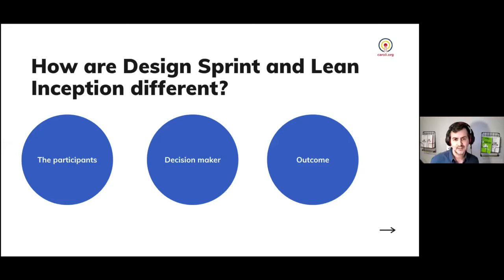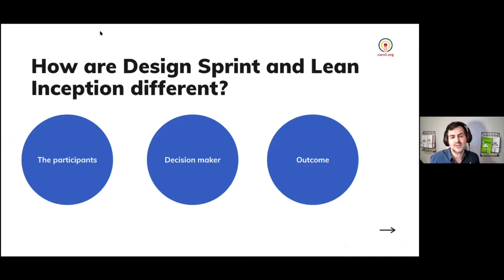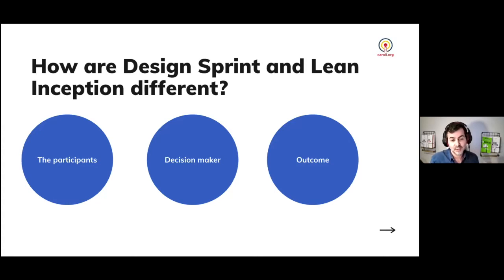In Lean Inception, it's quite the opposite. You don't want to have a decision maker, because you have very conflicting perspectives — business, UX, and technology. You have the facilitator, and the facilitator guides the conversation. At the end of the week, we try to find the intersection or compromise, and that ends up in the MVP — but there is no decision maker. The group decides together when forming the sequence and the canvas — it's not one person deciding. That's a big difference.